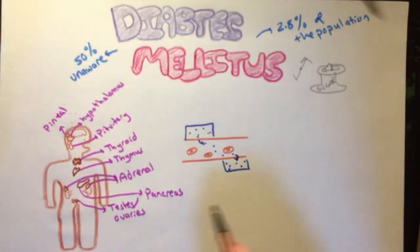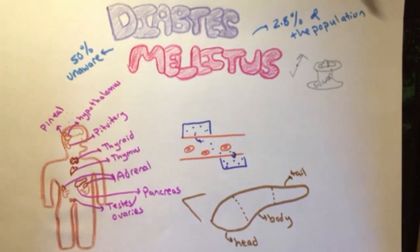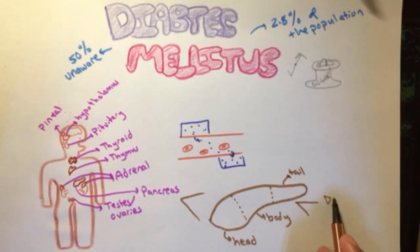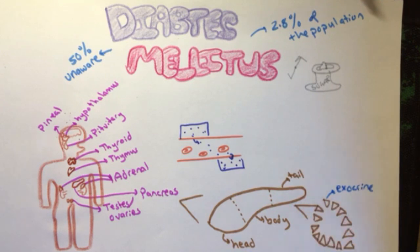Normally, the pancreas consisting of a head, body, and tail is made up of acini that has an exocrine function, which means that they secrete their hormones into ducts. Between these acini, there are millions of clusters called islet of Langerhans, or pancreatic islets.